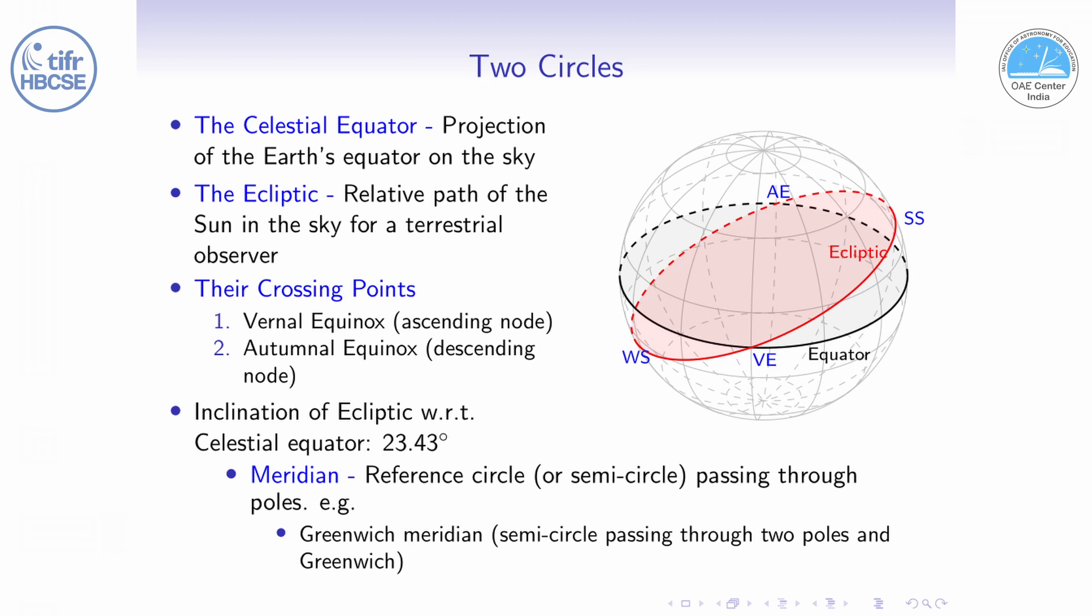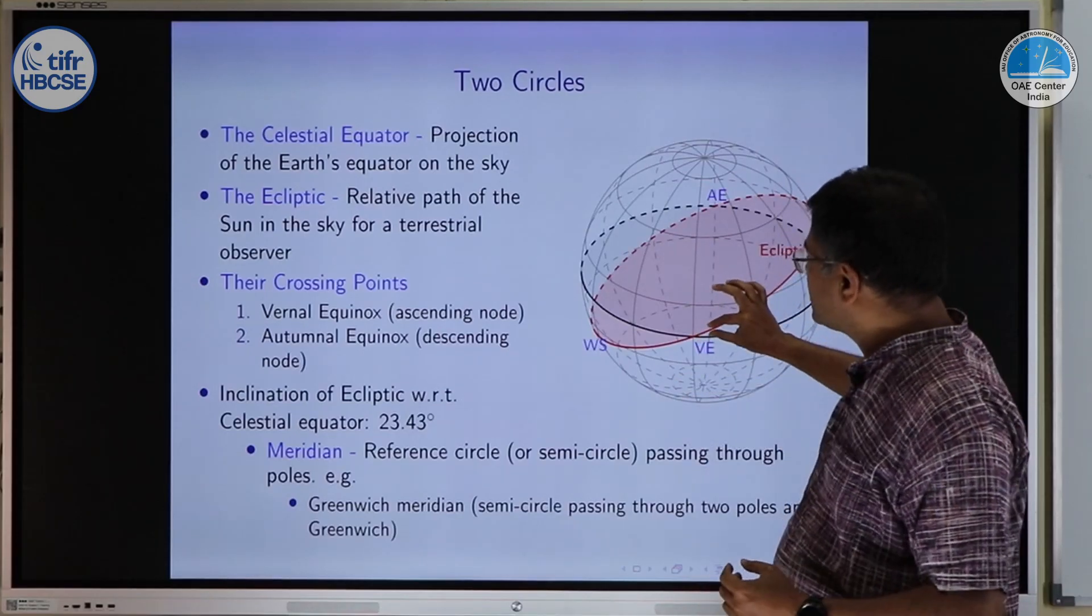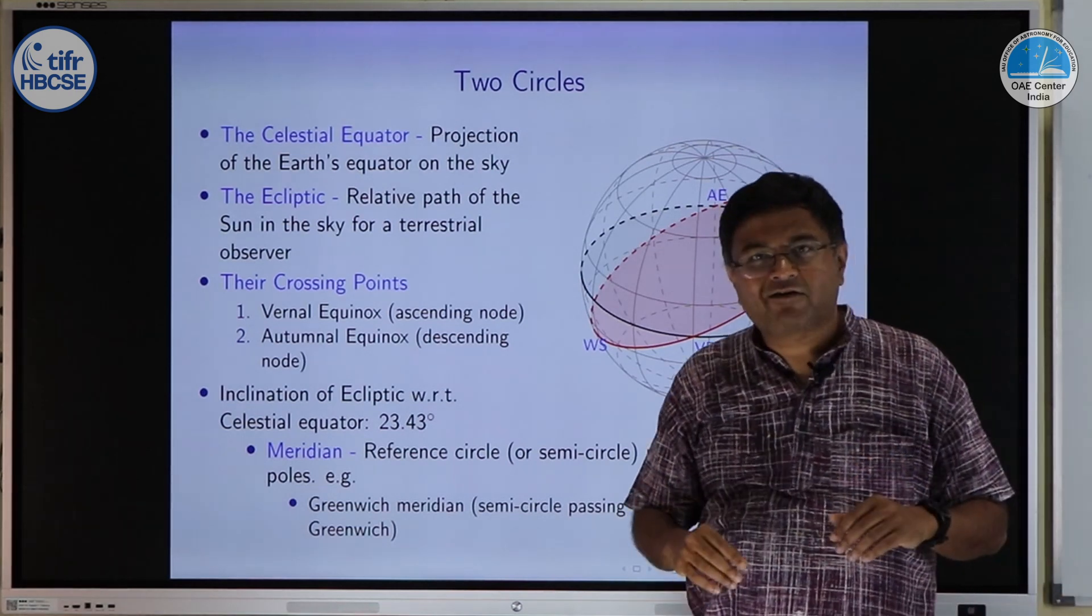The dark black line is the celestial equator and the red line is the ecliptic. As you would recall, the crossing points are called vernal equinox and autumnal equinox. At summer solstice, ecliptic is way higher than the equator and winter solstice it is way below. The inclination between these two circles is roughly 23.5 degrees.